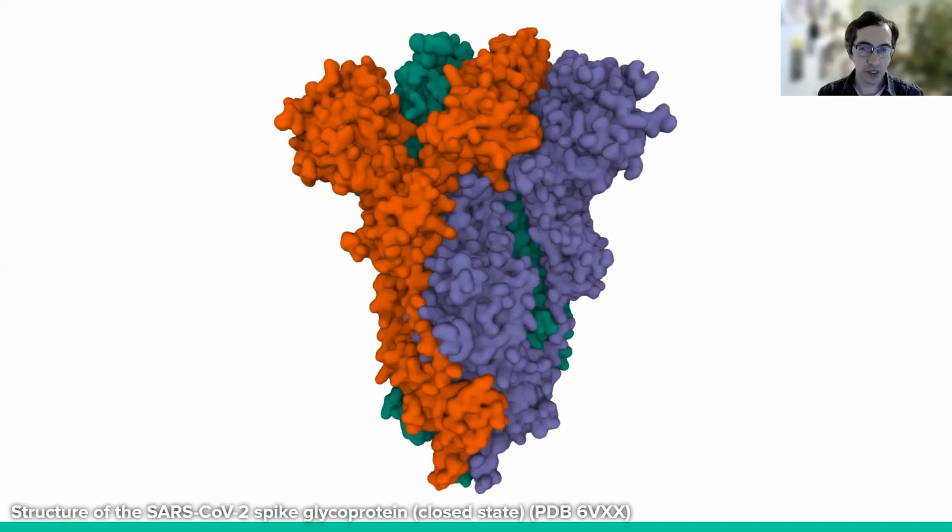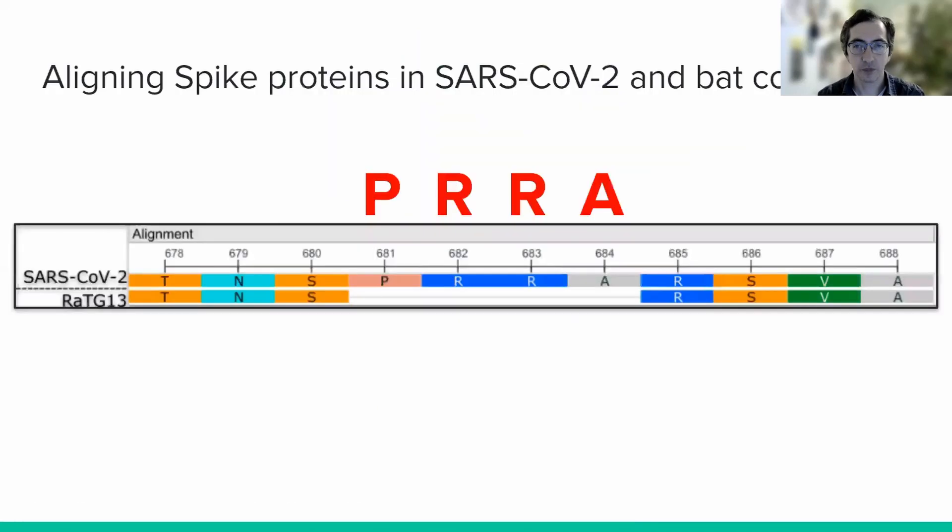Just as we did with the nucleotide sequences in the past, we can use BLAST to find existing protein sequences that are similar to our spike protein sequence. When we compare the SARS-CoV-2 spike protein sequence to the most similar existing spike protein sequence, which comes from bat coronavirus RaTG13, we see that SARS-CoV-2 spike has an insertion of 4 amino acids, PRRA. Is there any significance to this insertion?